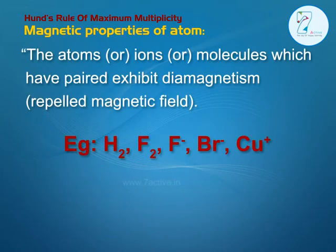The atoms, ions, or molecules in which all the electron spins are paired exhibit diamagnetism, repelled by magnetic field. Examples: H2, F2, F minus, B minus, Cu plus.